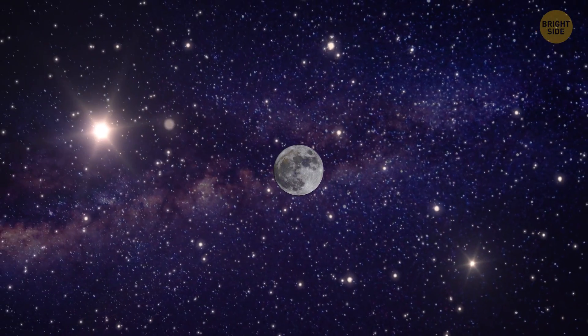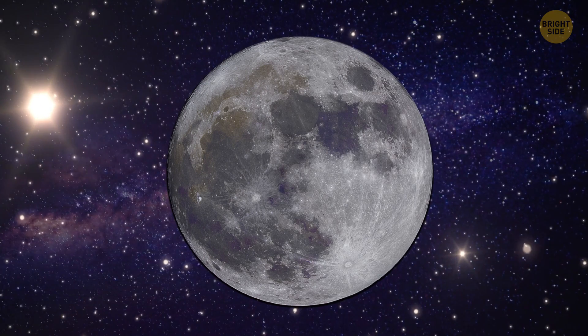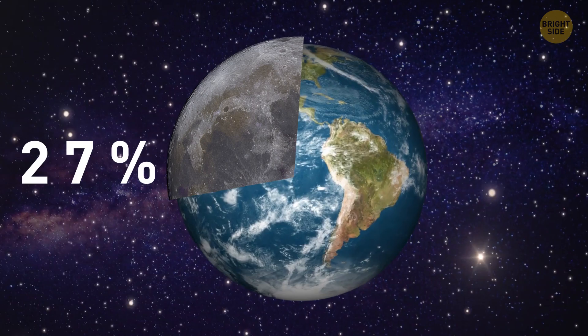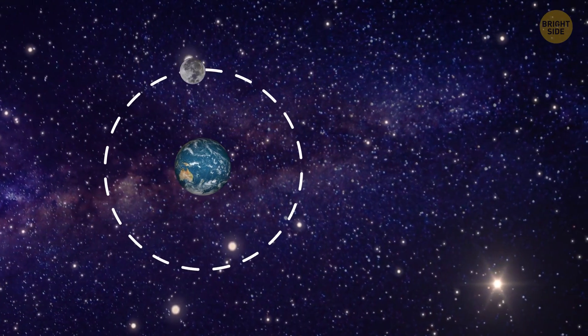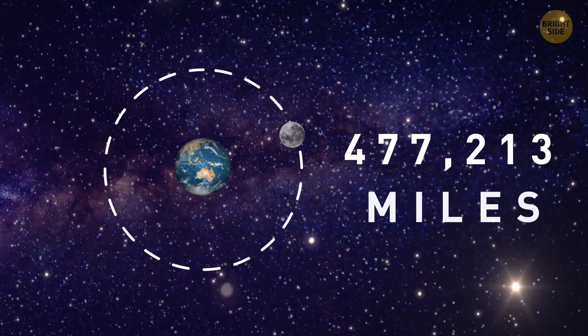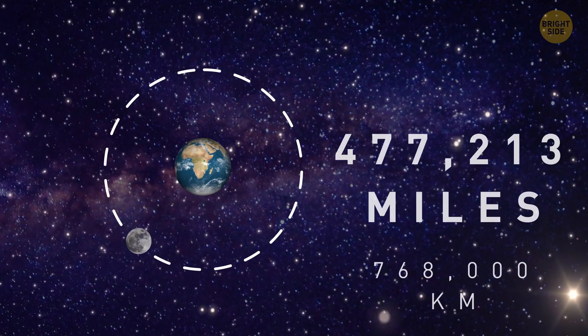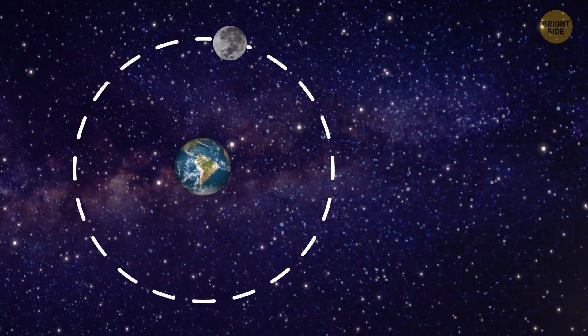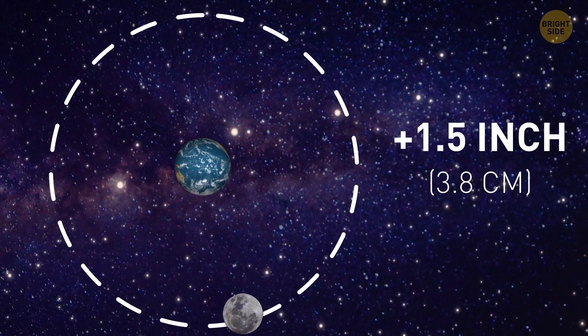The moon can seem small or large depending on the lunar cycle, but in actuality, it's just over a quarter or 27 percent of the size of Earth. The diameter of the moon's orbit around us is nearly 477,213 miles, but this diameter is increasing by 1.5 inches every year, which of course means that it's moving away by a factor of 1.5 inches each year.